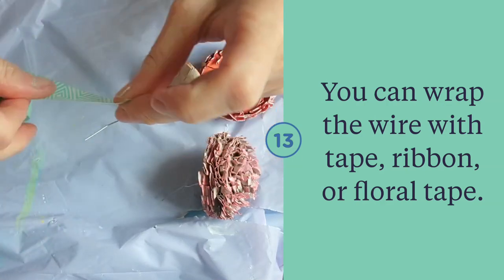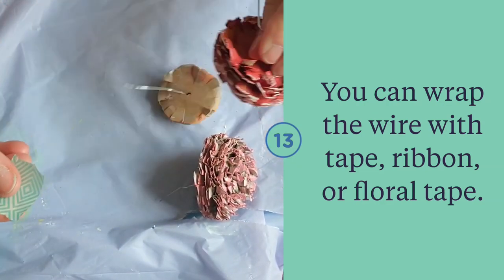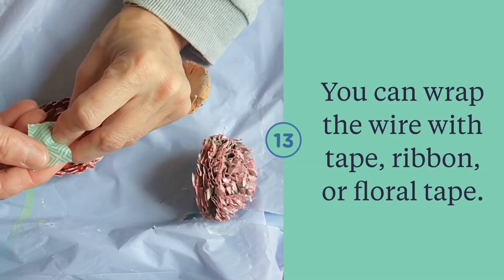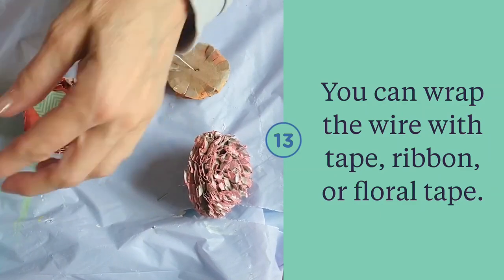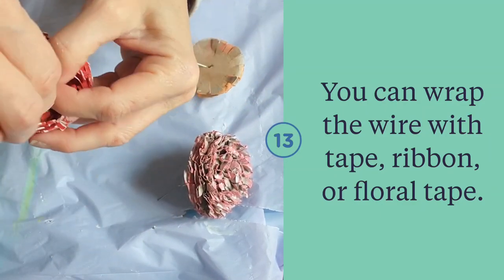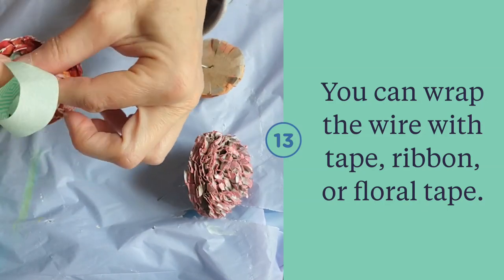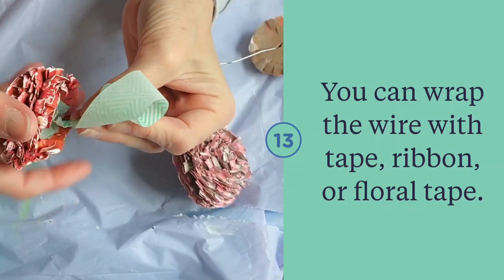To finish off the wire, you can wrap it with tape or floral tape. You could use ribbons—just put a little bead of glue on with a hot glue gun, then wrap it and glue the edge. It really does depend on what your plans are for the flowers on how you want to finish off the stems.